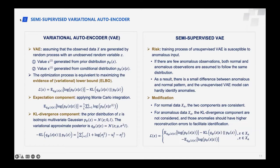However, the training process of an unsupervised VAE is susceptible to anomalous input. If there are few anomalous observations, both normal and anomalous observations are assumed to follow the same distribution. As a result, there is little difference between anomalous and normal patterns, and the unsupervised VAE model can hardly detect anomalies. Hence, the semi-supervised VAE is proposed to detect anomalies in multivariate time series.